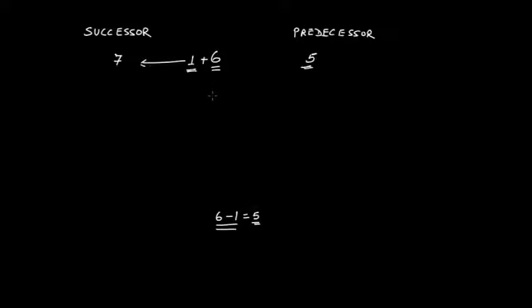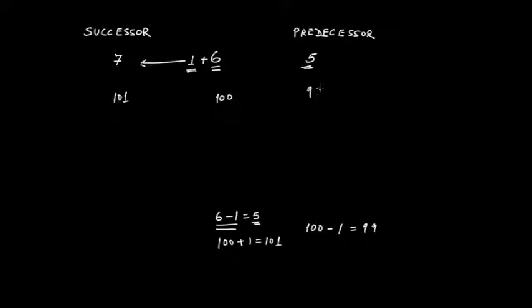Same way, if you are given 100 and you ask what is the successor, you will add one to 100 and get 101. Therefore, 101 would be the successor. What would be the predecessor of 100? You subtract one from 100 and get 99. Therefore, 99 would be the predecessor of 100.